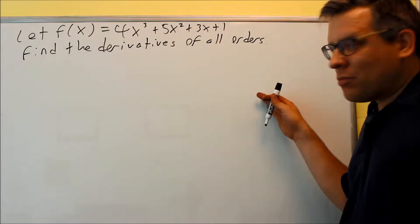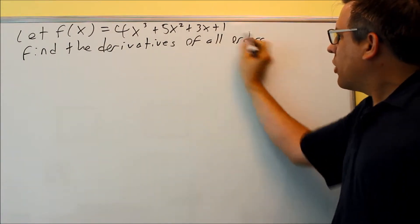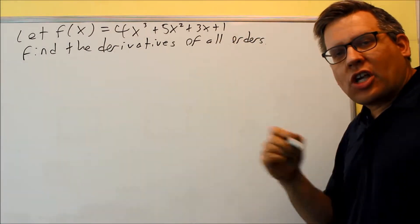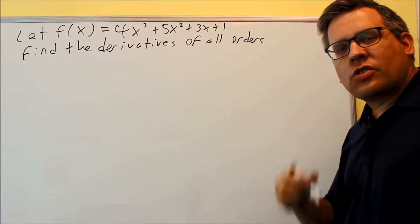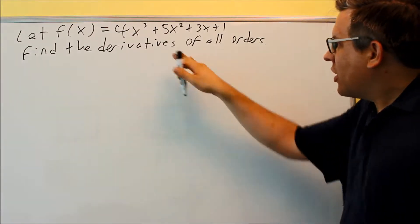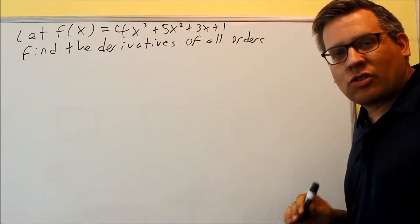Okay, for the example, it says find all the derivatives of all orders. This right here means that you're going to keep taking the derivative until you reach zero. Once you reach zero, then we can say that we've done the derivatives of all the orders that matter until you take it down to zero and we'll stop there.